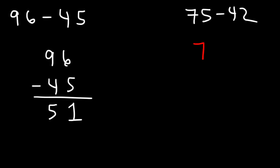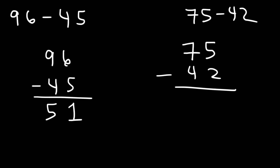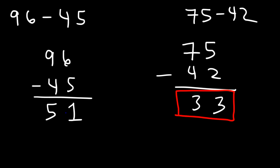On the right side, we have 75 minus 42. Let's begin by subtracting 5 minus 2, which is 3. And then we have 7 minus 4, which is also 3. So here are the two answers: 75 minus 42 is 33, and 96 minus 45 is 51.